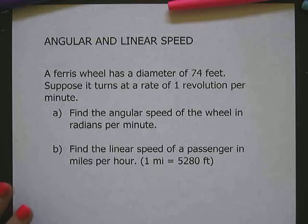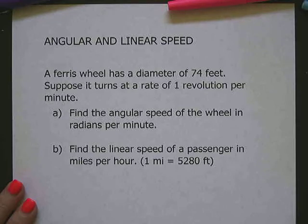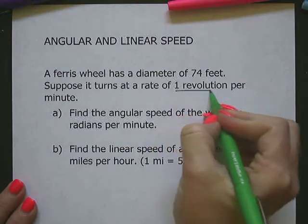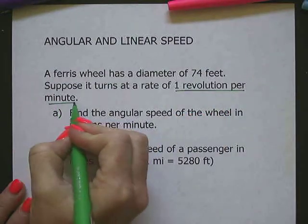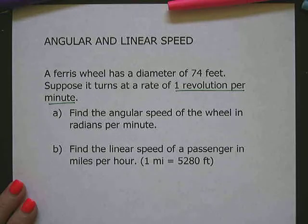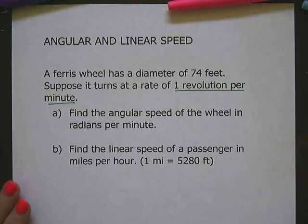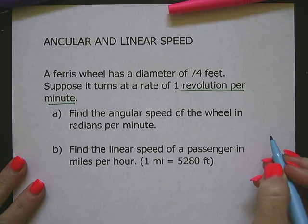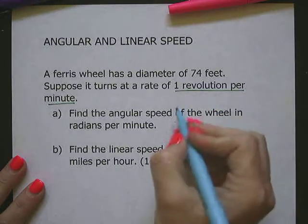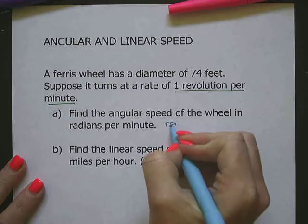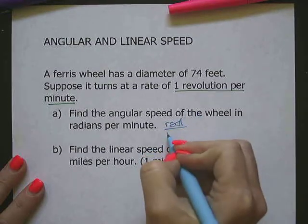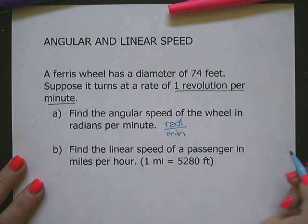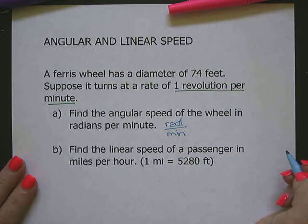In this first problem, we have a Ferris wheel with a diameter of 74 feet and it turns at a rate of one revolution per minute. They're asking for the angular speed of the wheel in radians per minute. So that means when we're finished with this first part, we want our fraction to have radians in the numerator and minutes in the denominator.